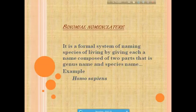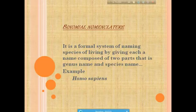Here we discuss binomial nomenclature. It is the formal system of naming species of living things by giving each a name composed of two parts, i.e. genus and species name.